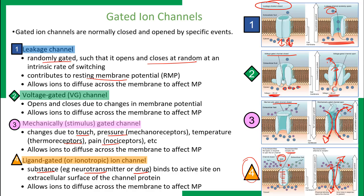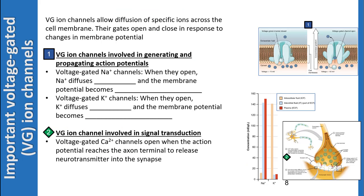These four types of gated ion channels are very important because they control the flow of ions across the membrane rather than allowing diffusion at all times. Continuing on voltage-gated ion channels: three important voltage-gated ion channels are critical to nerve function. The first two — voltage-gated sodium channels and voltage-gated potassium channels — are involved in generating and propagating action potentials.